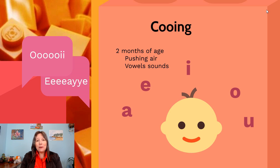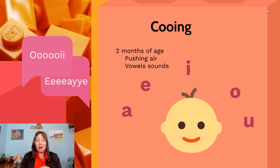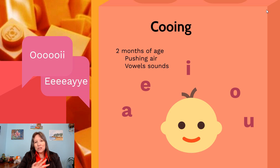Around two months of age, infants begin cooing, which happens regardless of culture or ethnic background. The brain begins to coordinate with the vocal cords, enabling vowel sounds — not just the vowels of the home language, but all possible vowel sounds. It's simply strings of vowel sounds with no consonants.